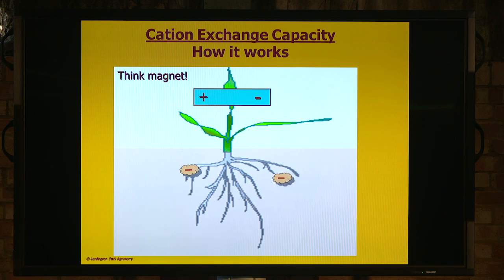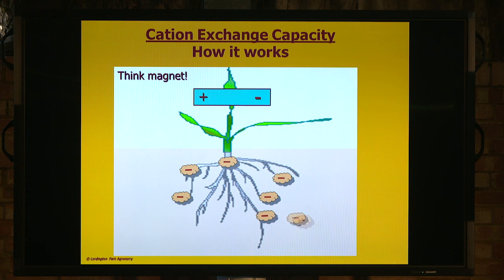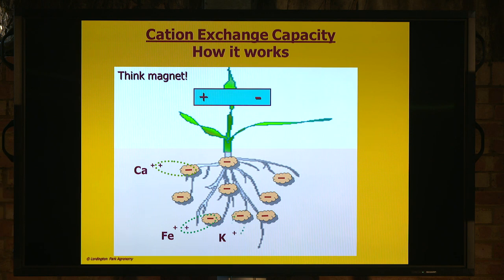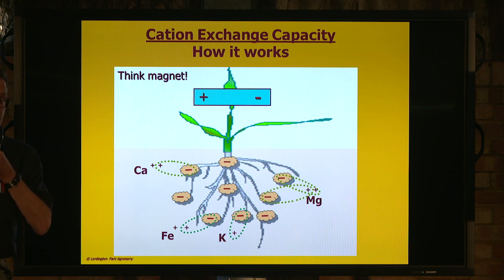So if you think of that area around the roots as predominantly negatively charged — that's your clay, that's your silt, that's your organic matter — sand doesn't have a charge at all. And then you've got your positively charged nutrients in the soil that are bound onto that negative area. Depending on the positive charge it's got, it depends how much it's bound in the soil.